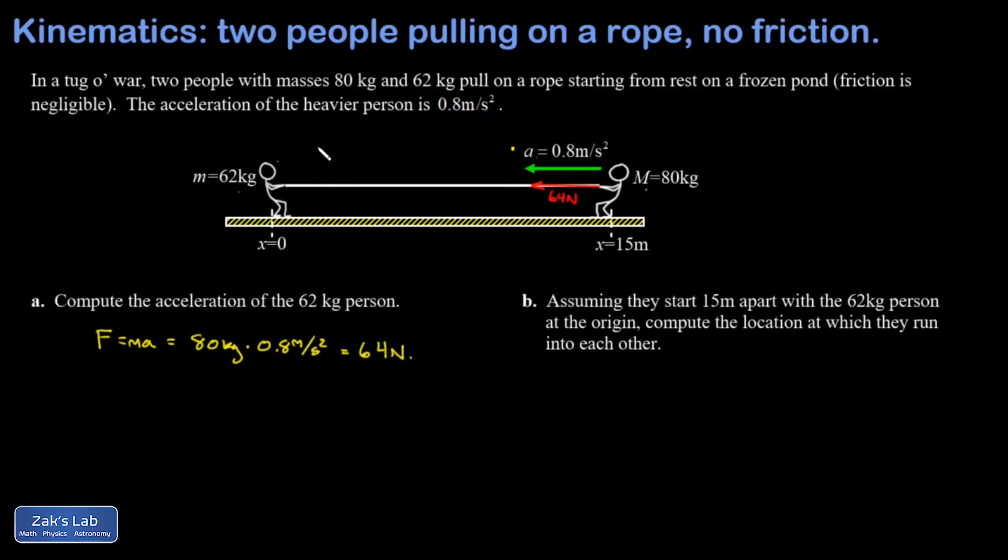Then invoking Newton's third law, we know that when two objects are interacting, they exert forces on each other that are equal in magnitude but opposite in direction. So there must be a 64 newton force to the right on the lighter person.